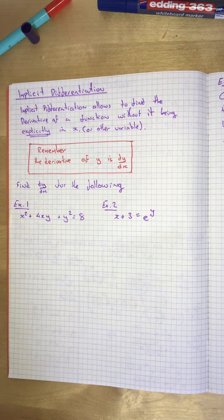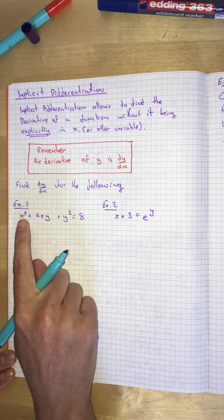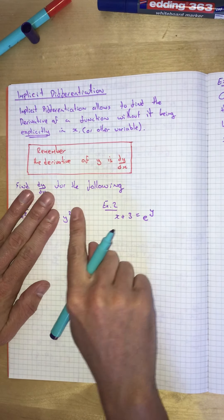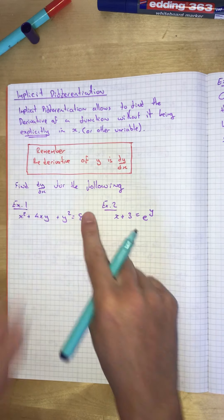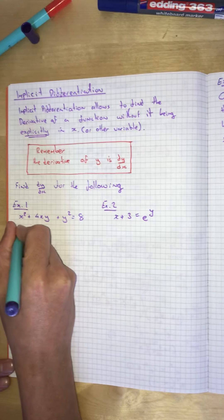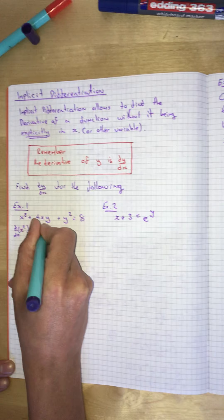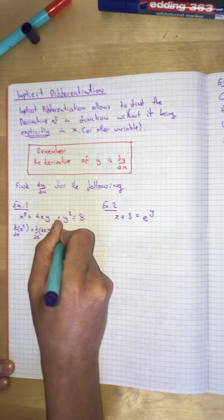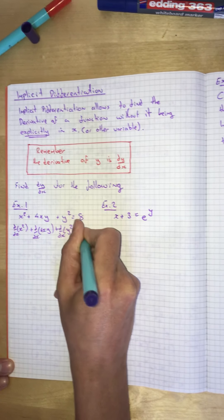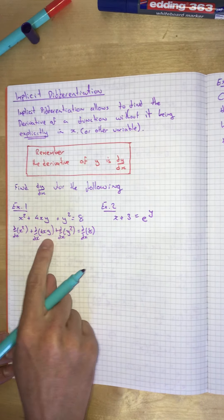The process is: we just differentiate each term independently. So I'm going to differentiate x squared, I'll differentiate 4xy, I'll differentiate y squared, and then I'll differentiate 8. So we're differentiating: the derivative of x squared, plus the derivative of 4xy, plus the derivative of y squared, equals the derivative of 8. Now let's independently differentiate them all and we'll deal with that y in a minute.